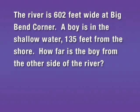In this problem, the river is 602 feet wide at Big Bend Corner. A buoy is in the shallow water, 130 feet from shore. How far is the buoy from the other side of the river?